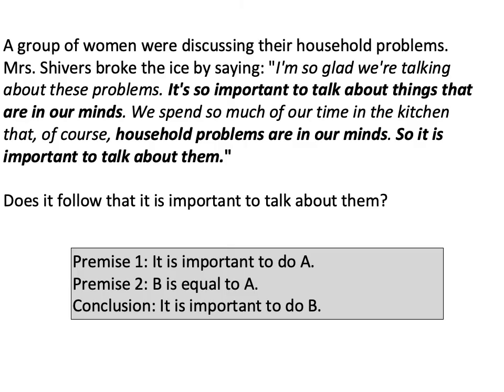So how would we solve this problem just by logic alone? Here's the statement again. The first real premise is: it's so important to talk about things that are in our minds — we can restate that as 'it is important to do A.' Premise two: we spend so much time in the kitchen that household problems are in our minds — restated formally as 'B is a case of A.' The conclusion: it is therefore important to do B. If it's important to do A, and A and B are equivalent, then it's also important to do B. This is a valid deduction — the only conclusion that can be drawn given those premises, with no alternative conclusion possible.